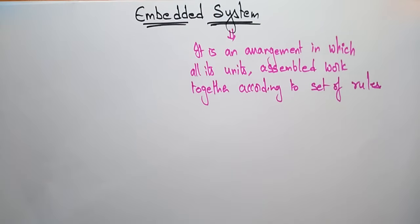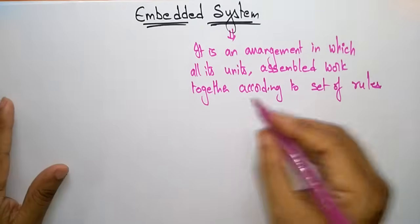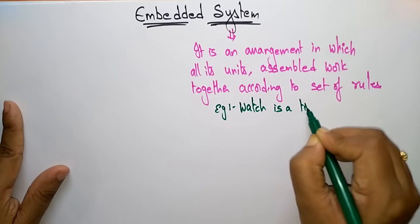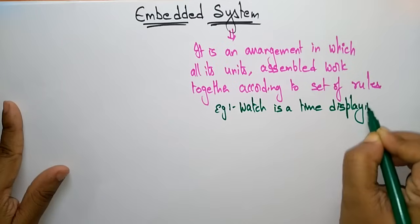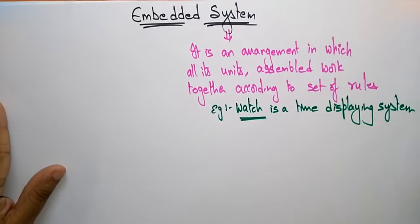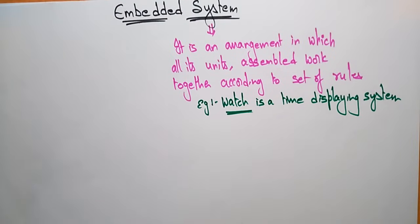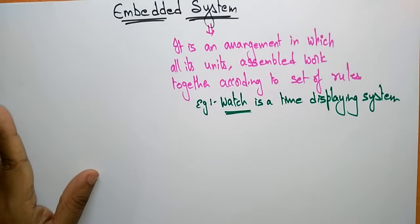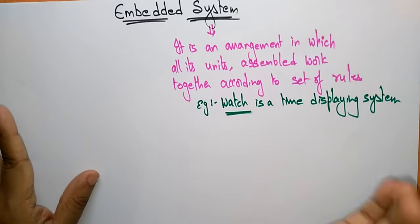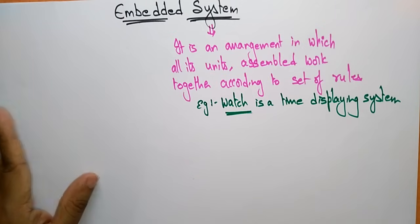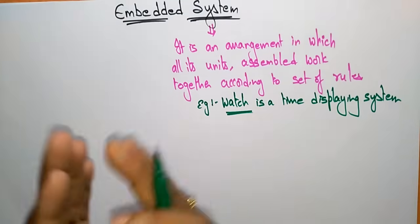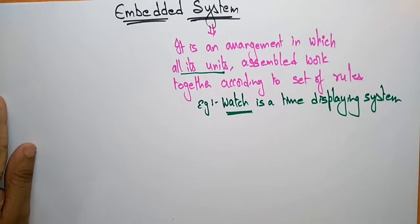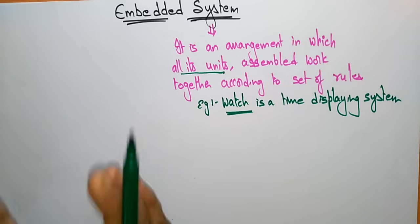Let's take the example of a watch. A watch is a time-displaying system. This watch is a system which shows the time, and its components follow a set of rules to show the time. Suppose if one part of the watch fails, the watch will stop working. Therefore, in a system, all its components depend on each other — whatever units are present, those units depend upon one another.